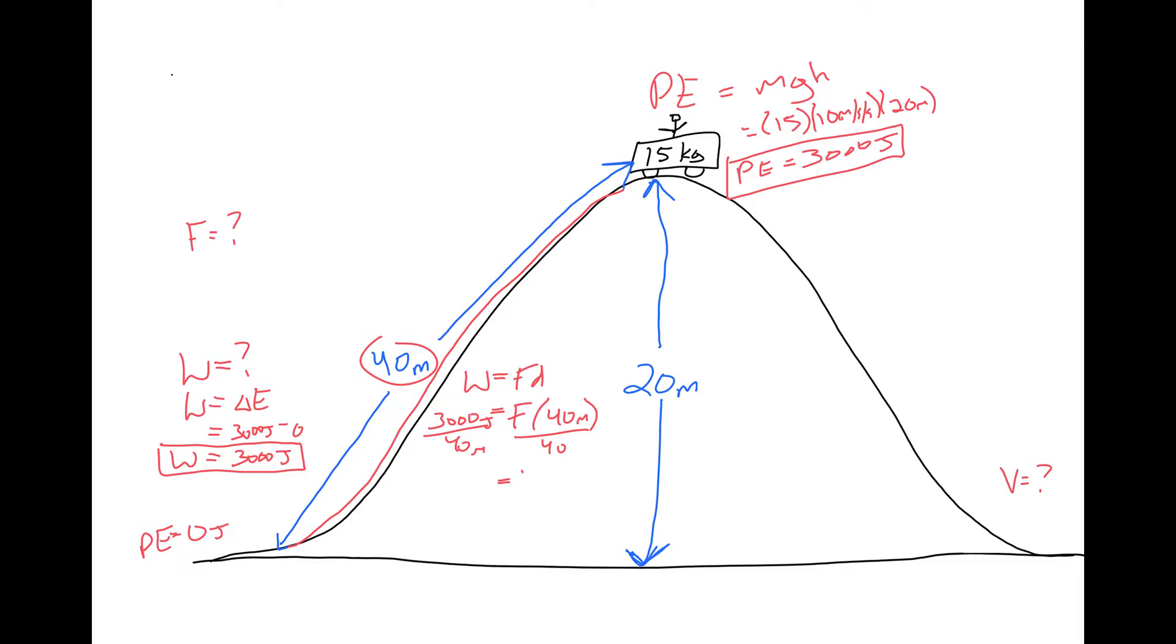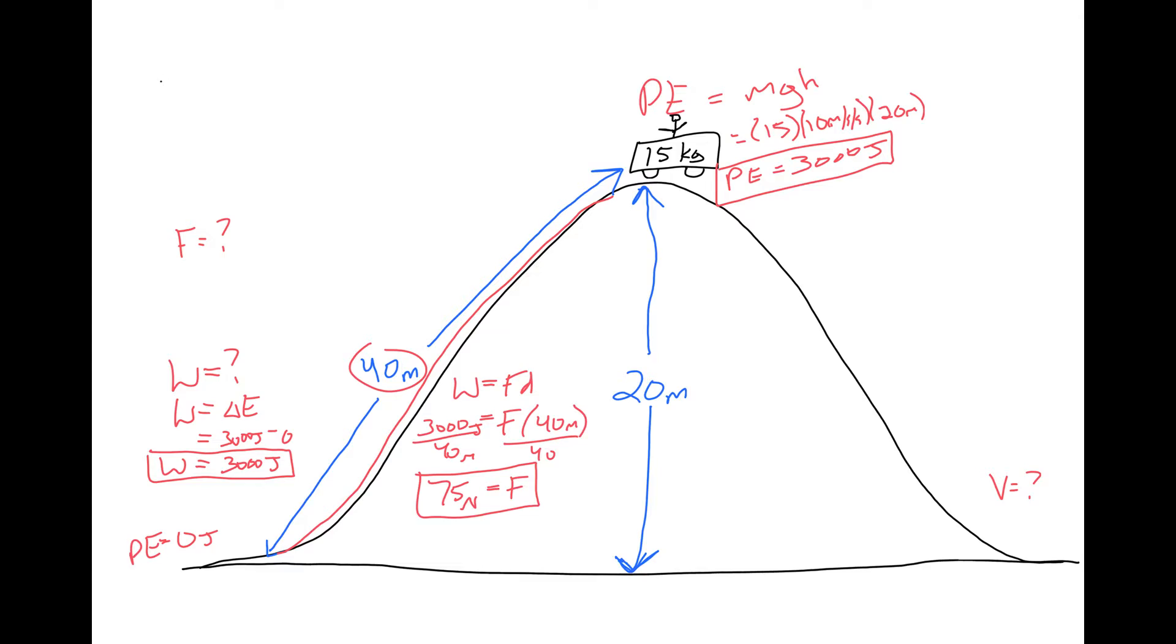So if I divide both sides by 40 meters, I get a force of 75 newtons up that hill, which is less than it would be if I had to lift that cart straight up.